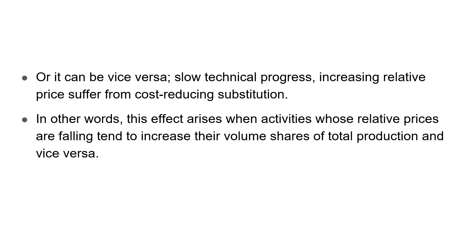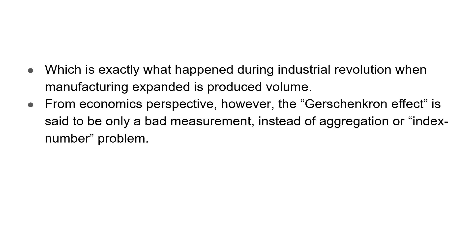The Gerschenkron Effect comes into being when activities whose later prices are falling tend to increase their volume shares of total production, and vice versa. This is exactly what happened during the Industrial Revolution, when manufacturing expanded its production volume — the Industrial Revolution drove the expansion of industrial production.